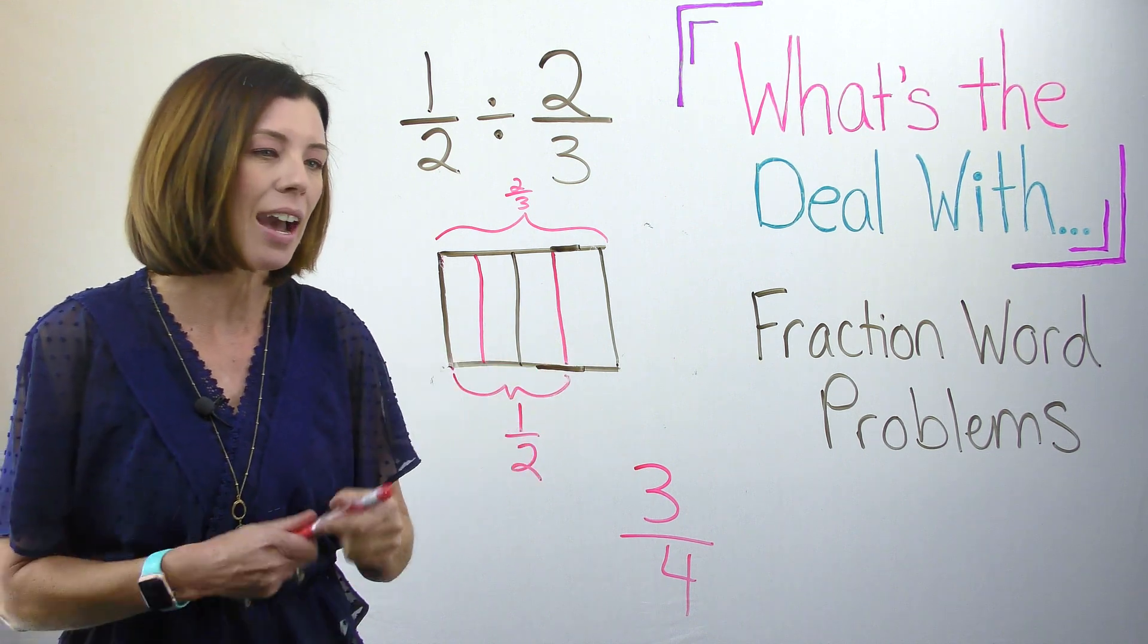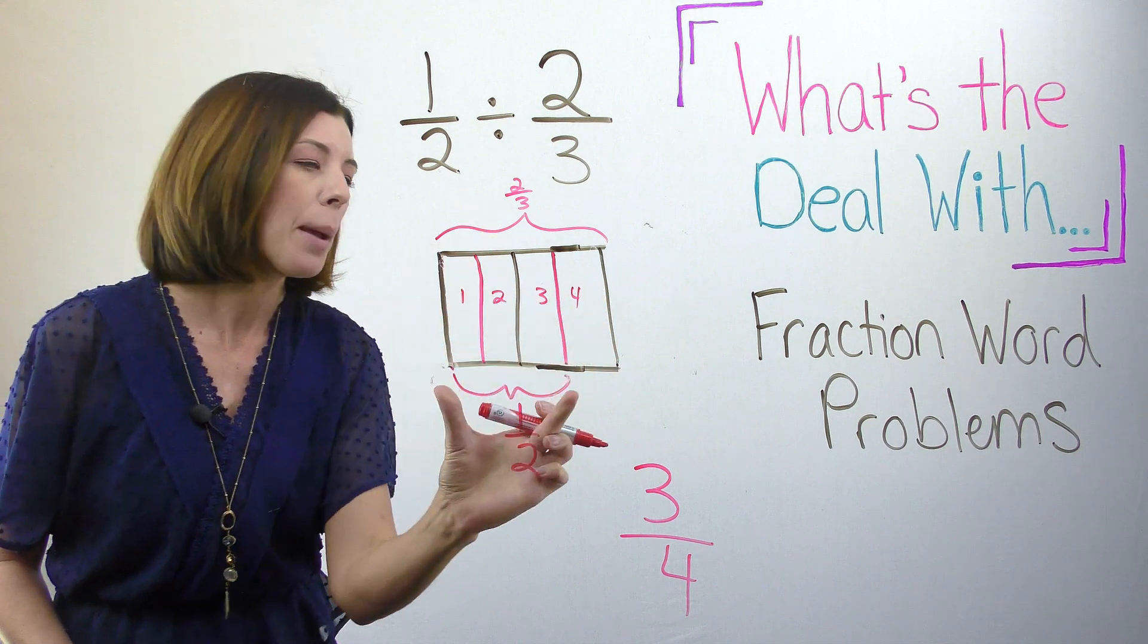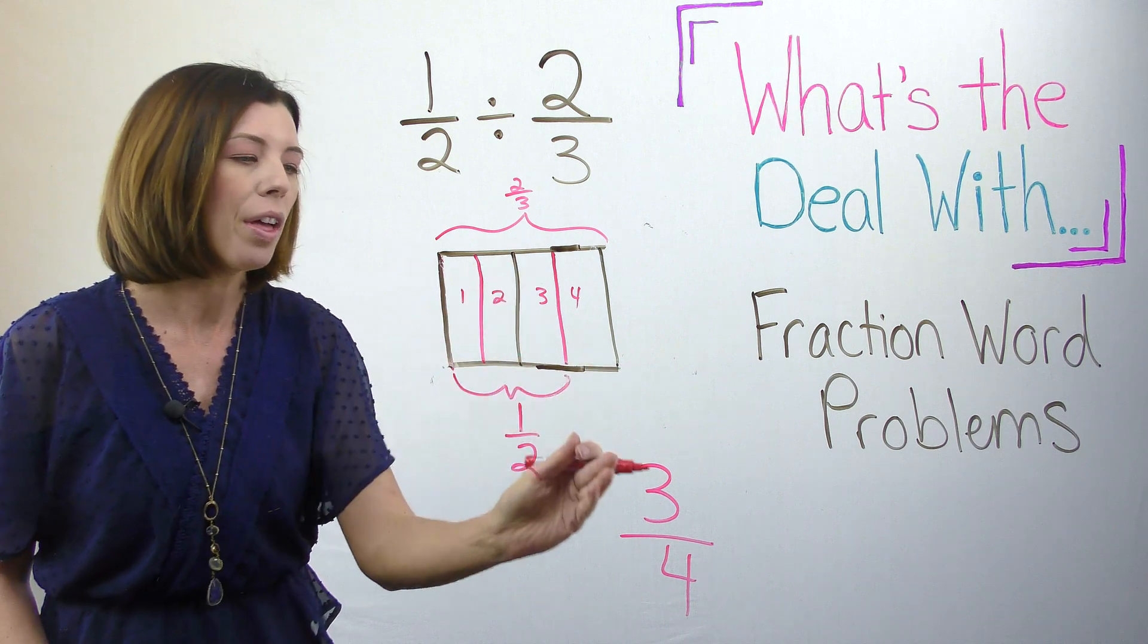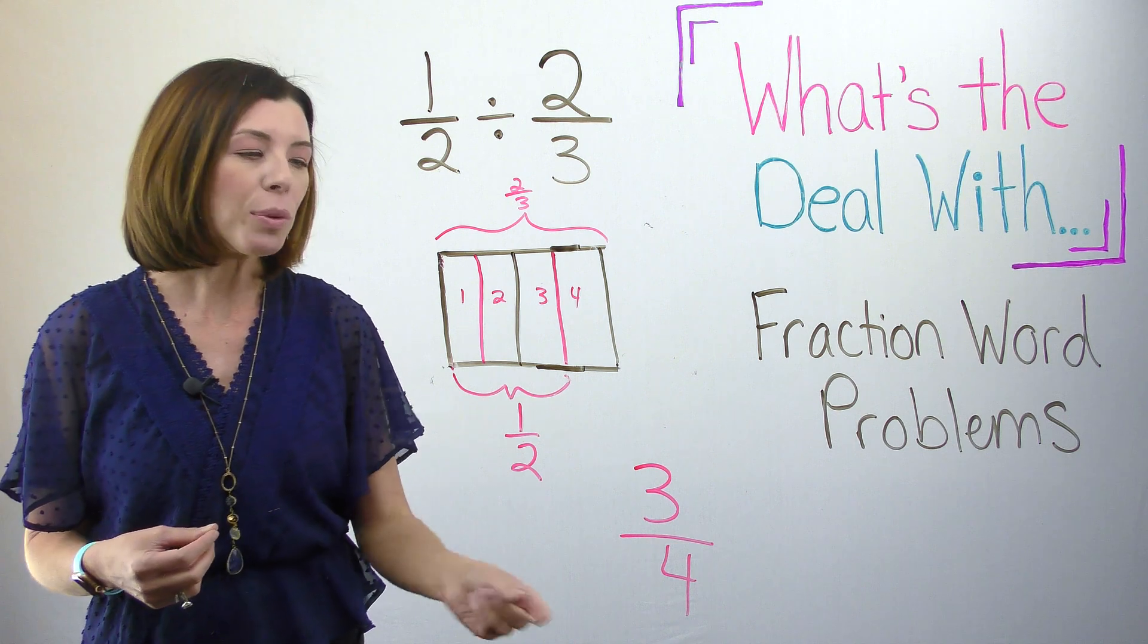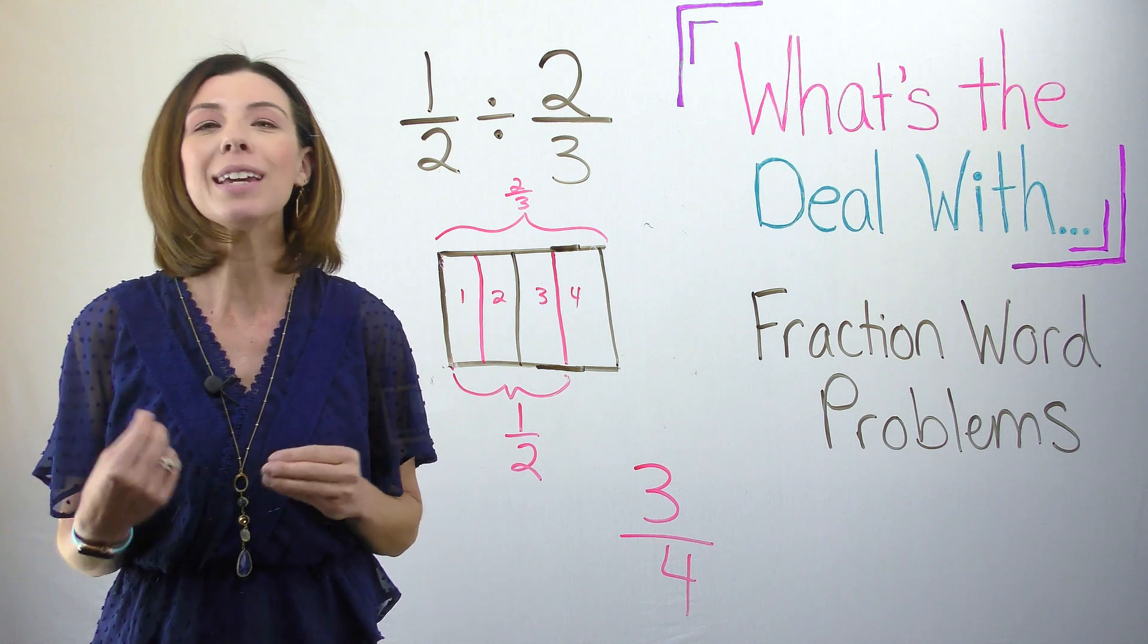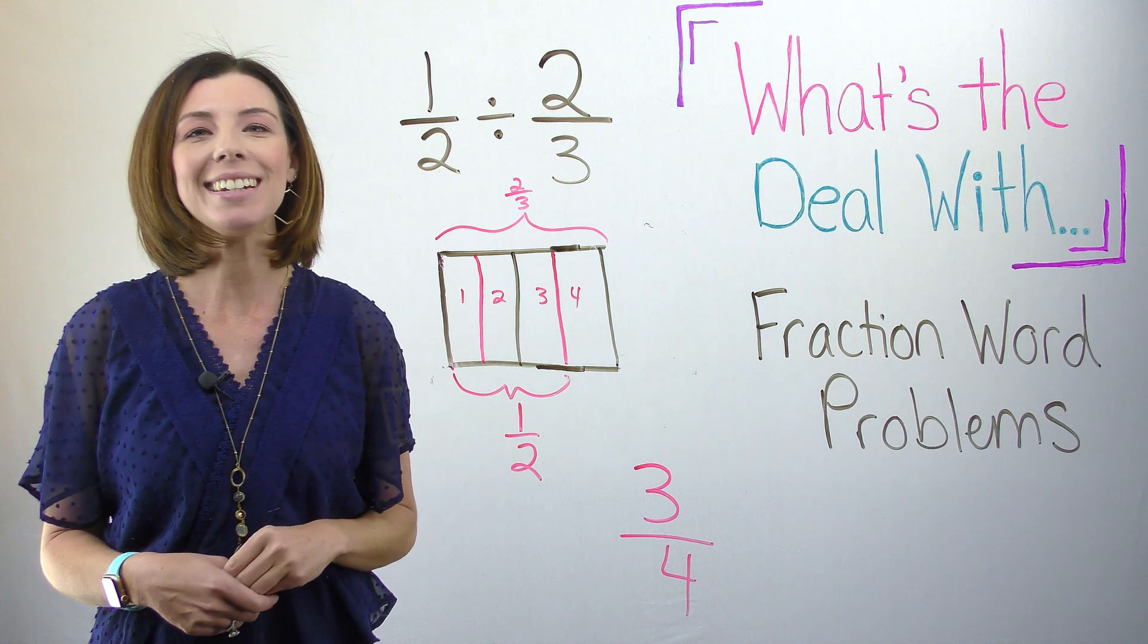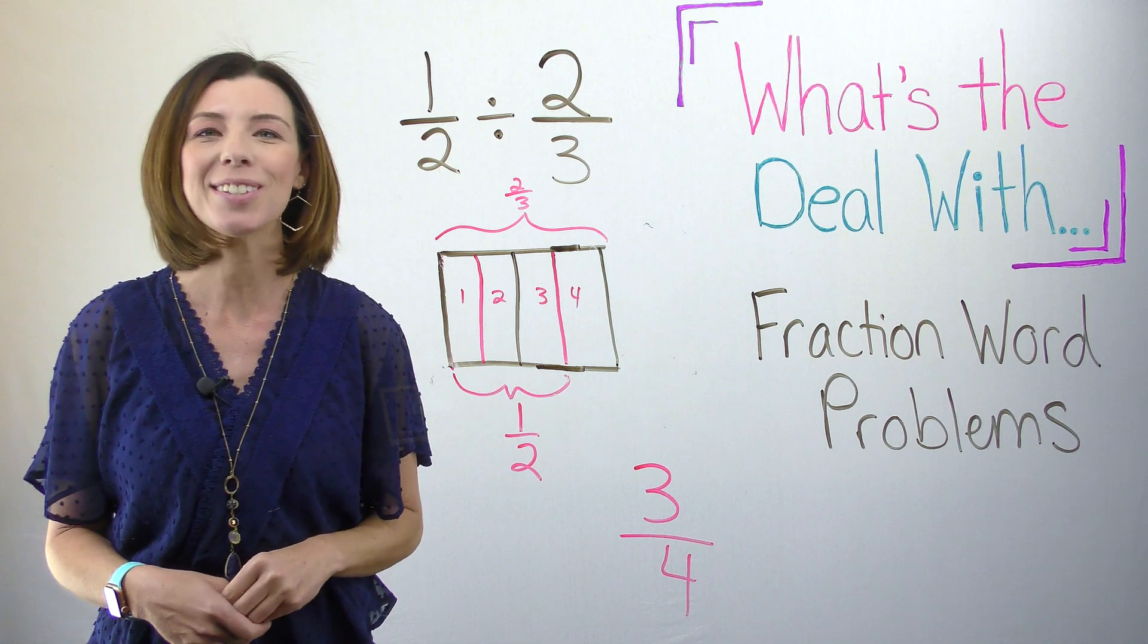Well, now I can see that I have one, two, three, four pieces, but I only have enough to make three parts of that whole. This is how I get three fourths. So I know that I can make three fourths of the whole recipe using my one half cup of butter. I hope that you now have a better idea of what's to deal with fraction word problems and some strategies to solve them.